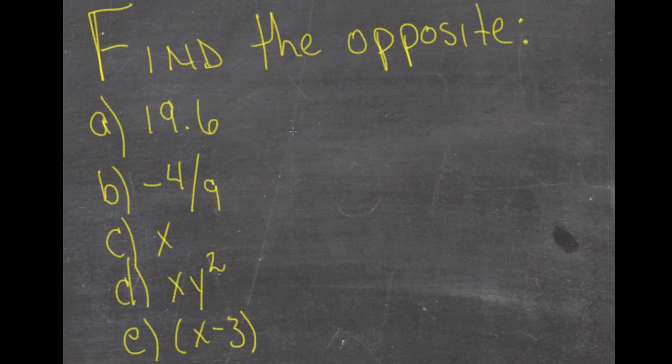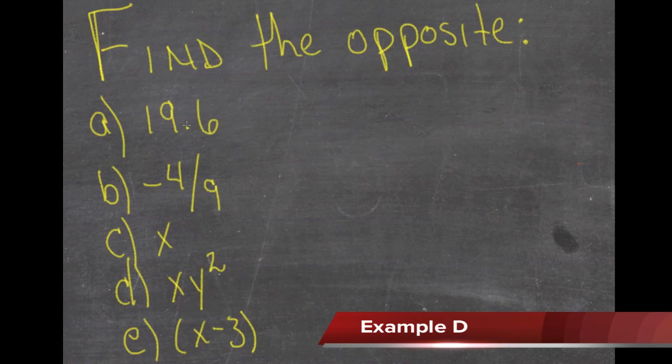Okay, remember, to find the opposite of any number, we just need to find out what number you would add to it to get 0.